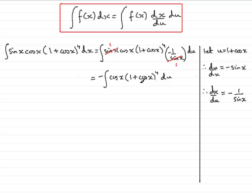Well, the obvious substitution for 1 plus cos x we can see is u, so this is going to be u to the power 4, but what about this cos x here? Well, cos x we can get across in terms of u because cos x is going to be equal to u minus 1.